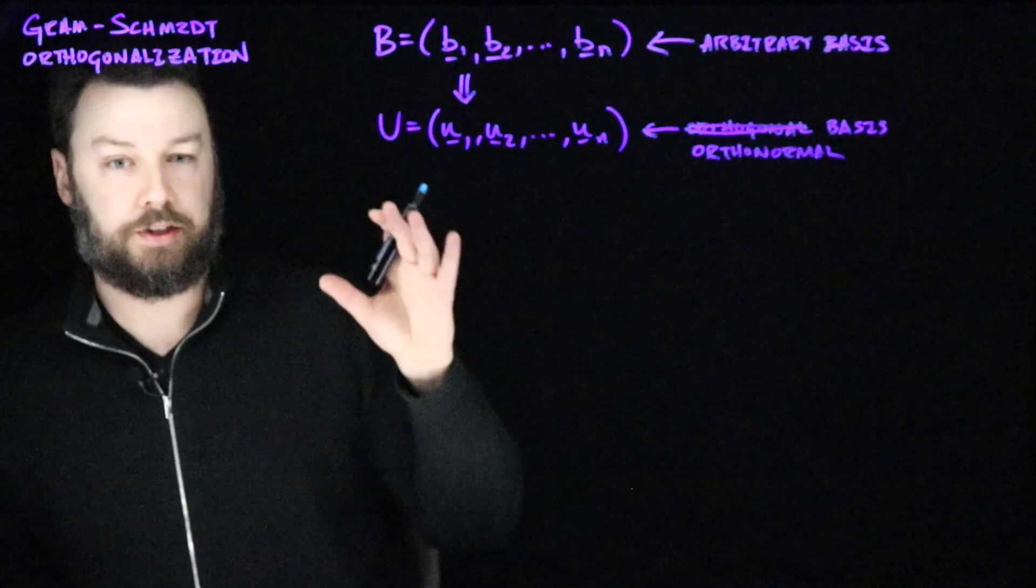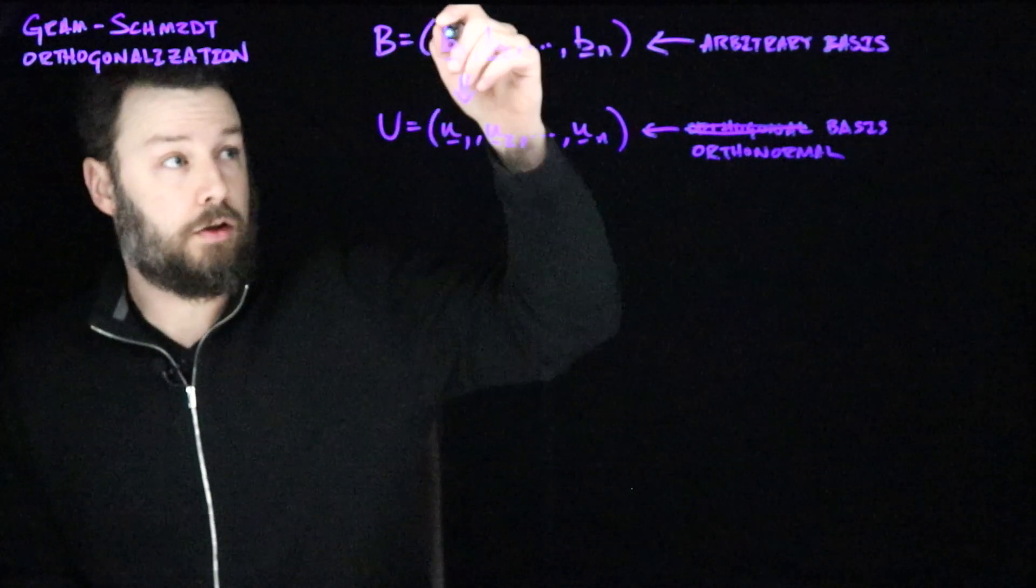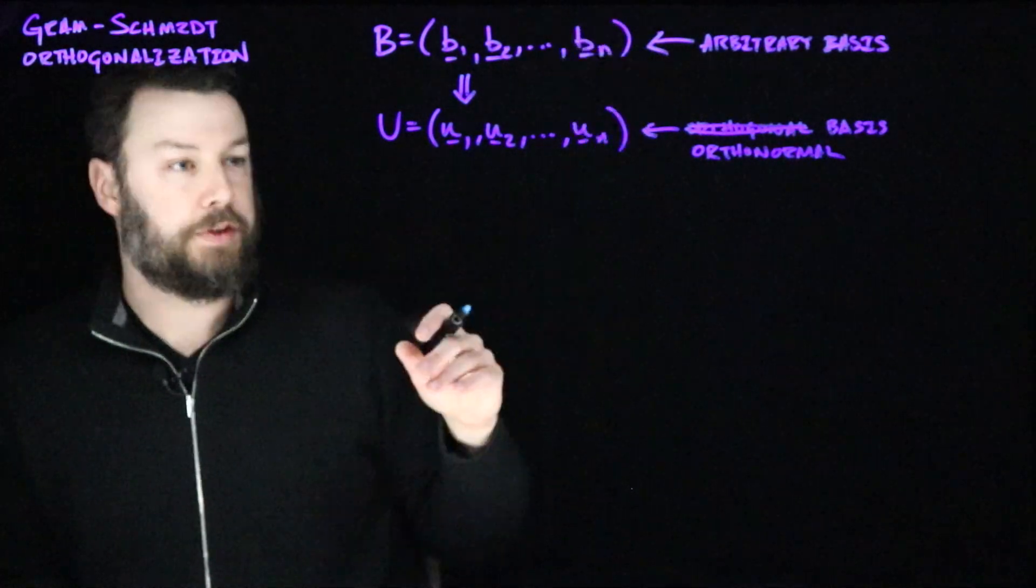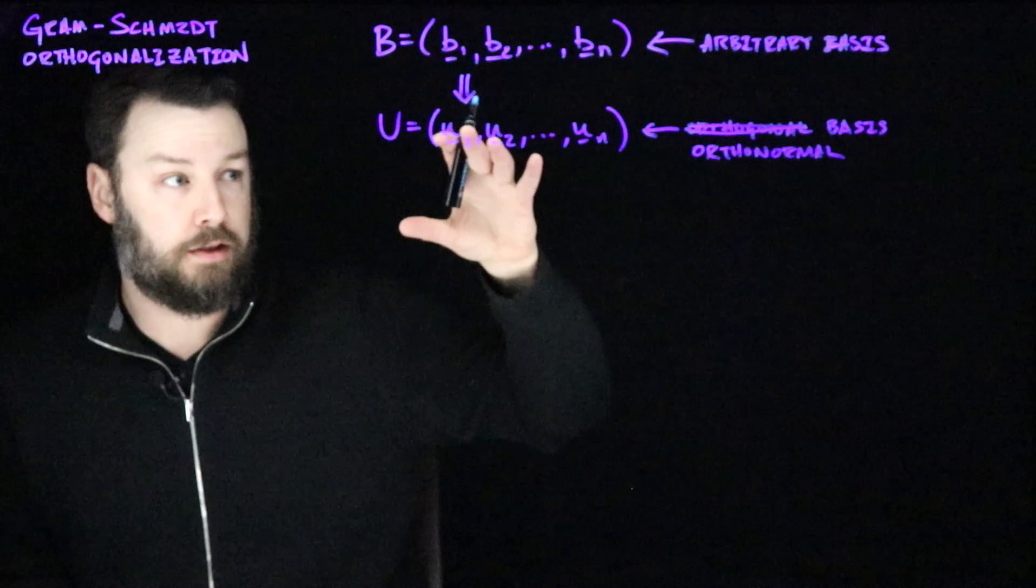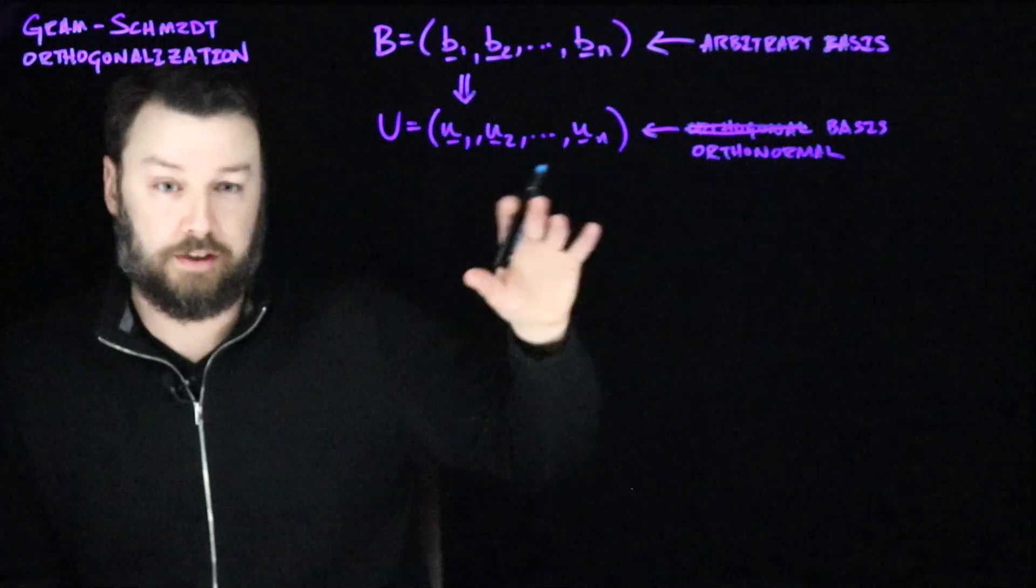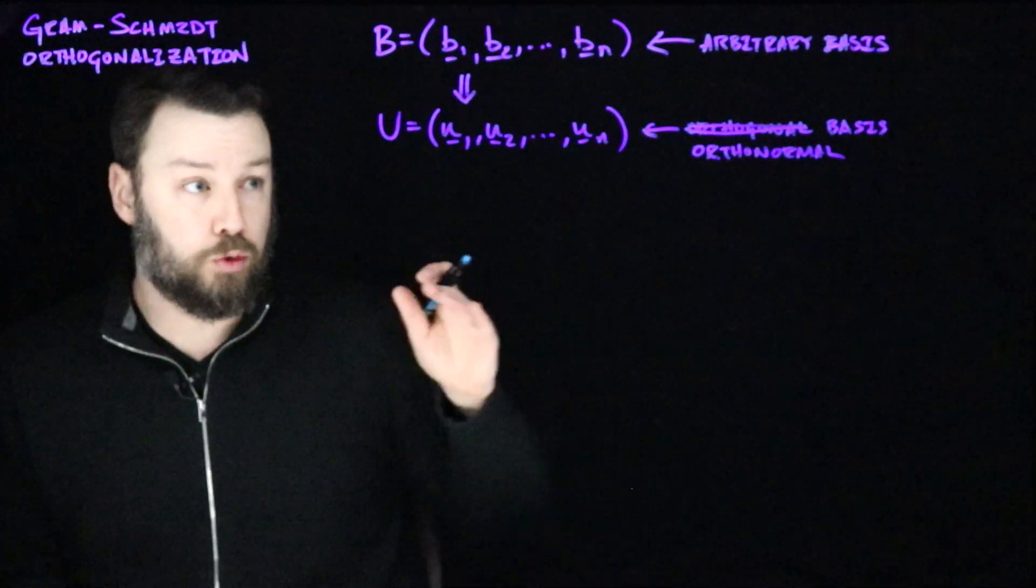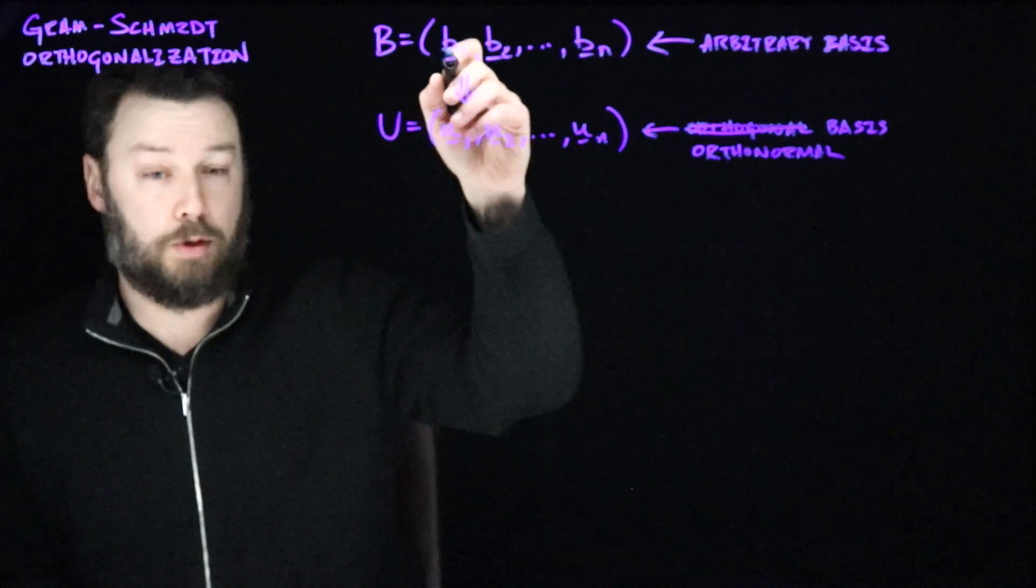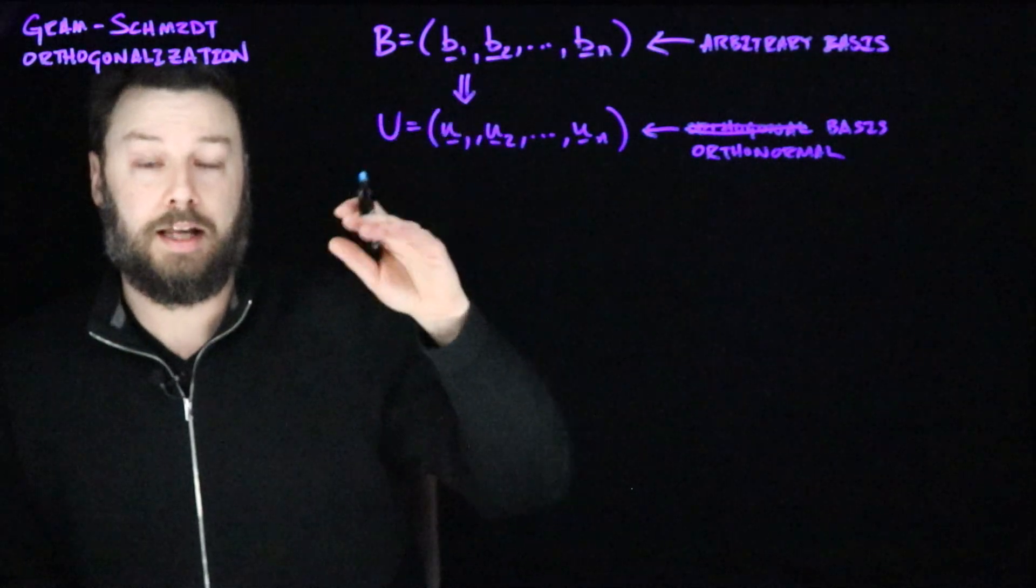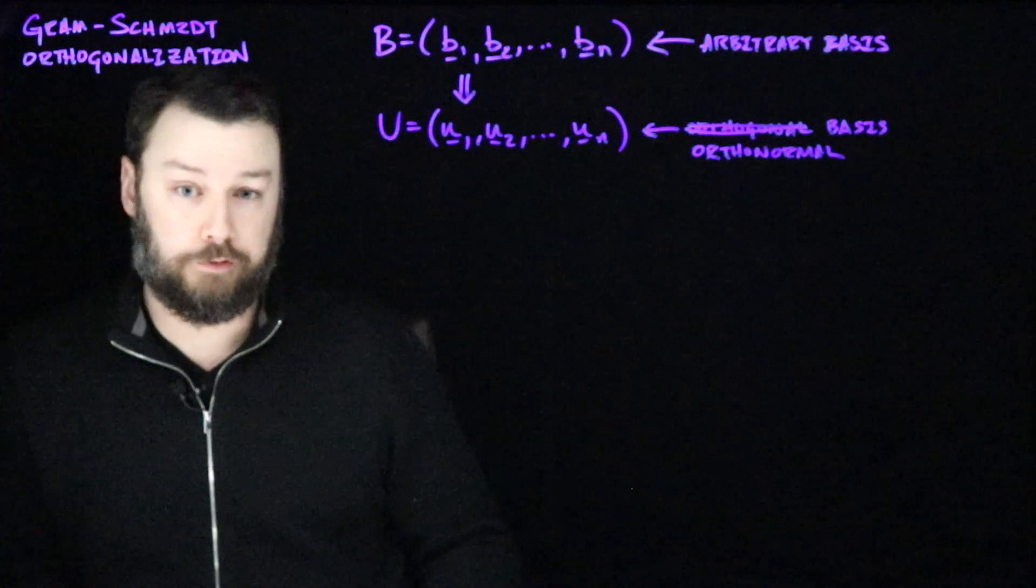So when we say that this algorithm is greedy, what that means is we're going to basically be ticking along through the basis vectors and producing a set of orthonormal vectors. And we're not going to do anything fancy accounting for future vectors or anything like that. We're just going to greedily tick along and make them one at a time. The very first thing we do is we treat the direction represented by b1 as the direction we're going to have for our first vector.